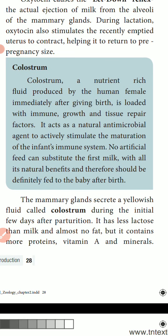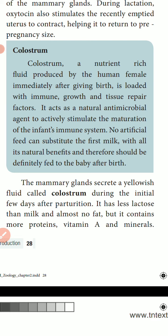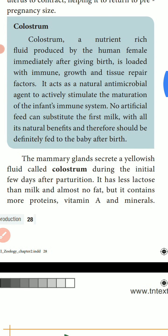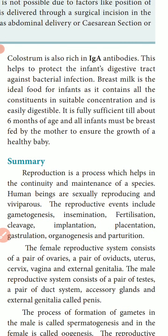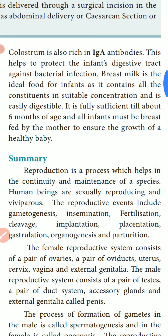Colostrum is a nutrient-rich fluid produced by the human female immediately after giving birth. It is loaded with immune, growth, and tissue repair factors. The mammary glands secrete this yellowish fluid during the initial few days after parturition. Colostrum has less lactose than milk, almost no fat, but contains more proteins, vitamins A and minerals, and is rich in IgA antibodies — which is very important.